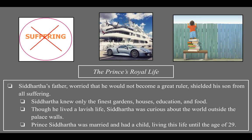As Siddhartha grew older, he lived a royal life. His father Suddhodana was worried that Siddhartha would not become a great ruler — he feared the prophecy about the priestly path. To prevent that, he shielded his son from all suffering. Siddhartha knew only the finest gardens, houses, education, and food — he lived a really privileged life without suffering.